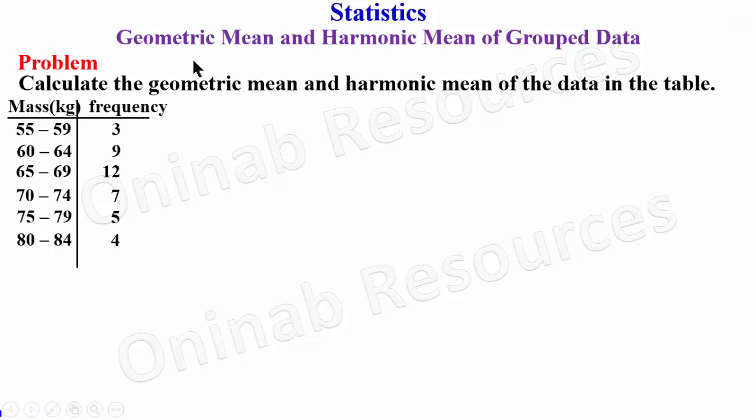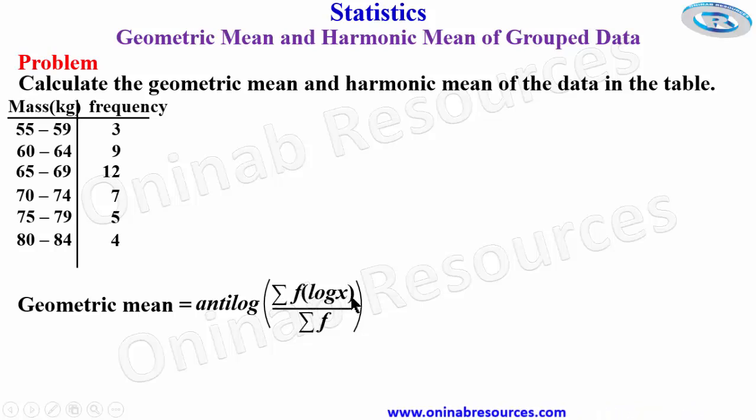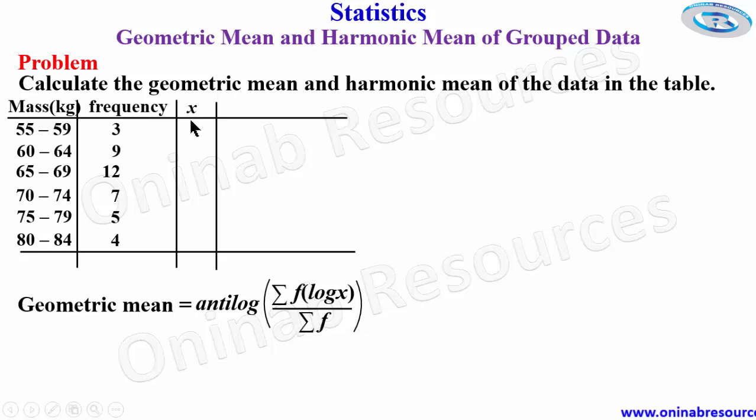We start with calculating geometric mean. To calculate the geometric mean we have antilog of summation of f times log x over summation of f. We are going to get more columns. First we need a column for x which is the mid value. We are going to be adding the lower limit and the upper limit and then divide by 2.